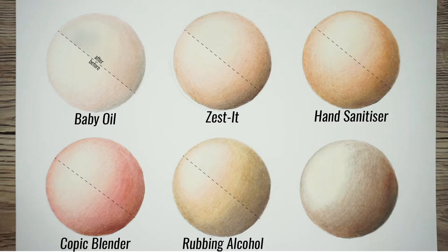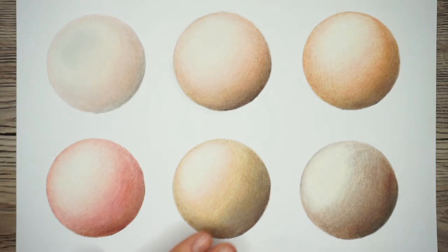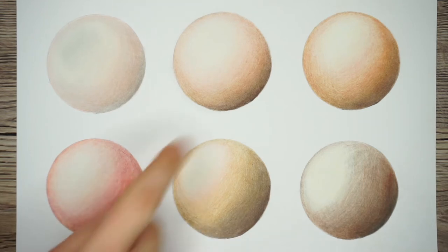The Copic marker has actually blended much nicer now that there's more colors. The alcohol has done a good job at blending, but on both this swatch and the previous swatch it's made the paper go all weird and bumpy. Can you see that? I'm going to get rid of the alcohol as well, so I definitely think it's between the Copic marker and the Zest It.